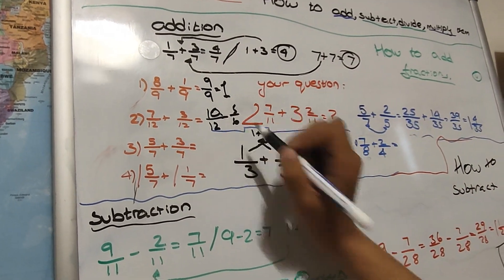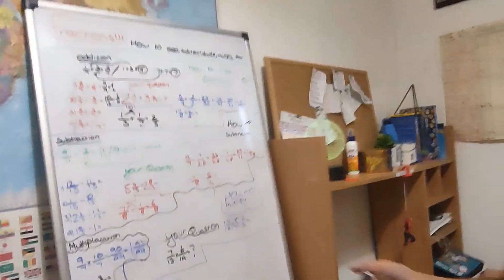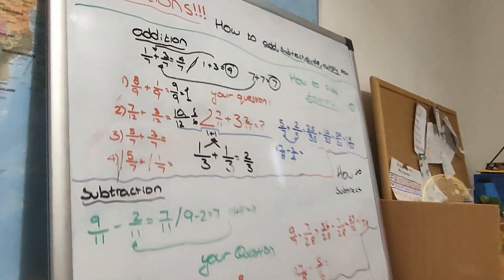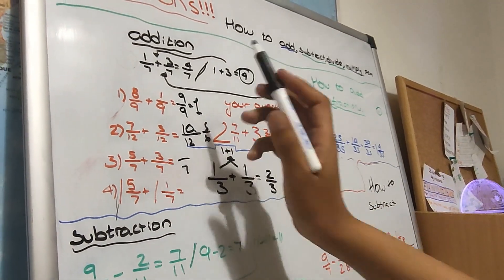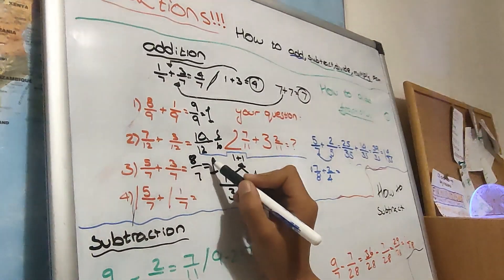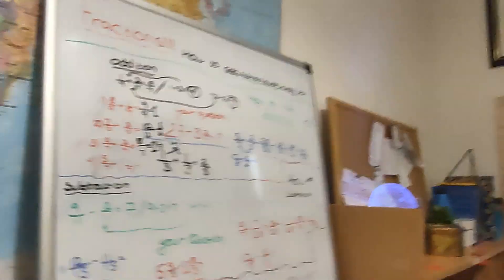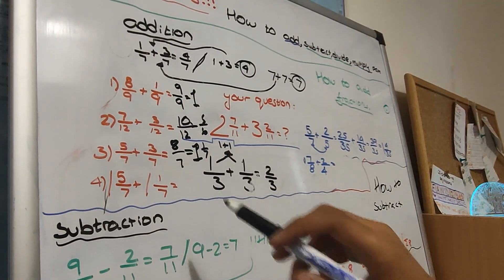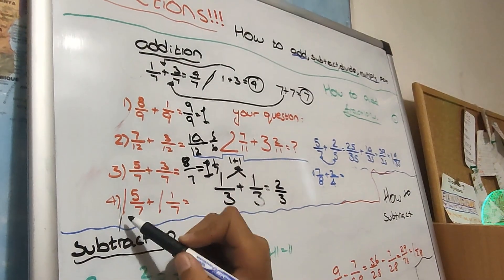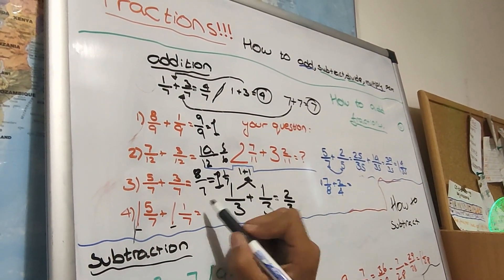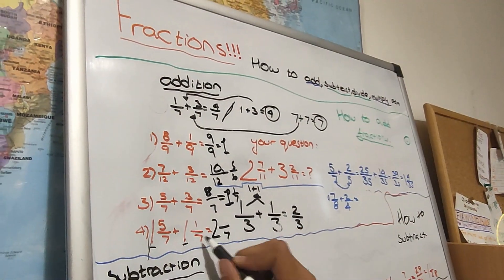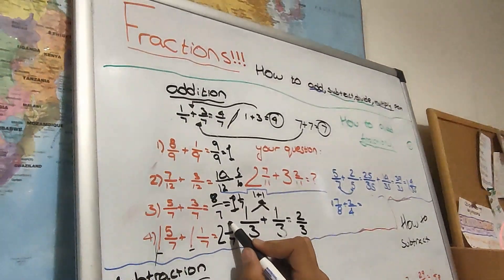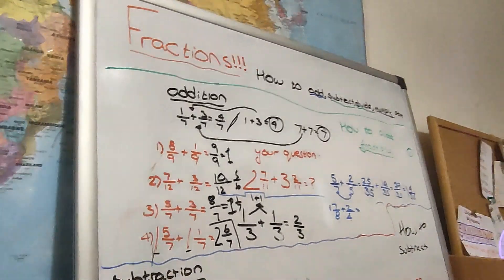And then you can further simplify it to 5/6. Then quickly through the last two questions: write the denominator which is 7, then you do 5 plus 3 which is 8, then you can convert it into 1 whole and 1/7. Finally the last question: 1 whole and 5/7 add 1 whole and 1/7. Add the whole numbers — 1 whole and 1 whole equals 2 wholes. Then put the denominator which is 7, and do 5 add 1 which is 6. So 2 and 6/7.